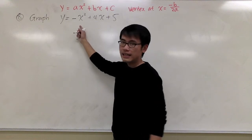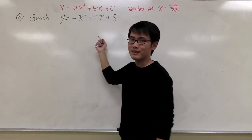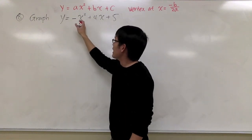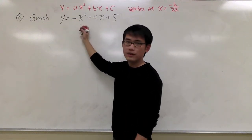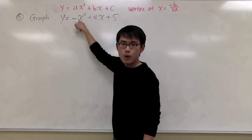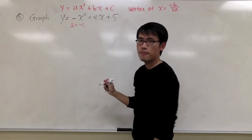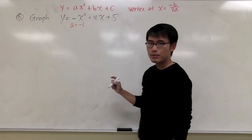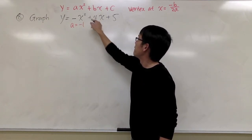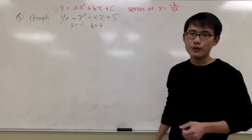Let's look at this equation and identify the values of a and b. The number in front of x squared is the value for a. We have negative x squared, so it's like saying negative 1 — so a is negative 1. And b is the number in front of x, which is positive 4. So a is negative 1 and b is equal to 4.